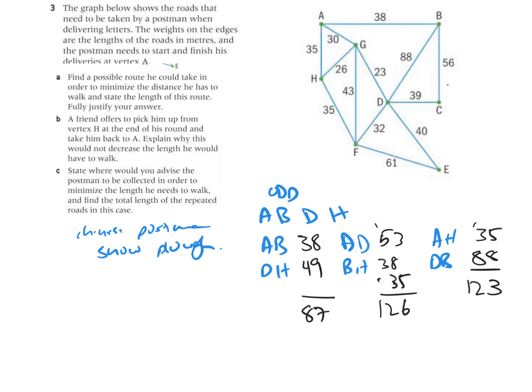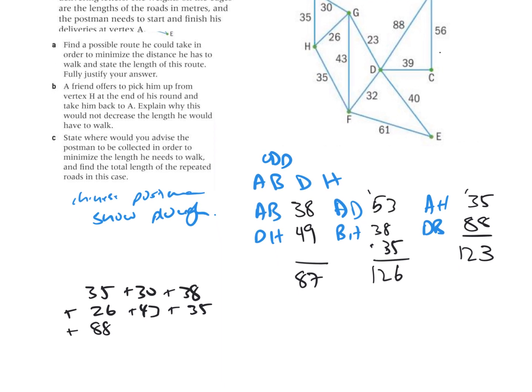Clearly AB and DH are the shortest extra bits. So in essence I'm going to add up all of the edges. It's going to be 35 plus 30 plus 38 plus 26 plus 43 plus 33 plus 35 plus 38 plus 56 plus 39 plus 23 plus 32 plus 43 plus 40 and plus 61.